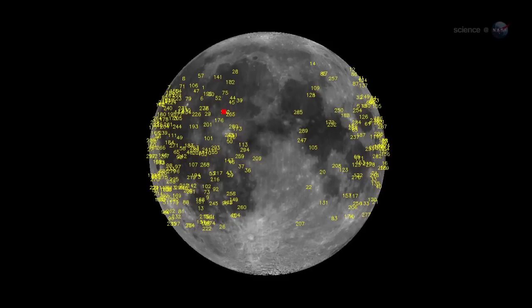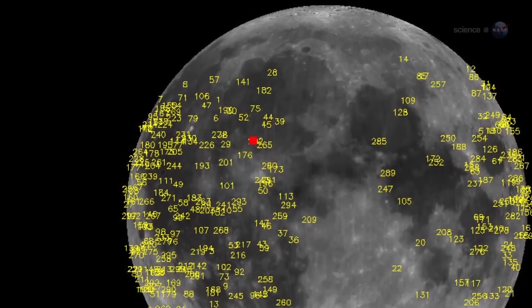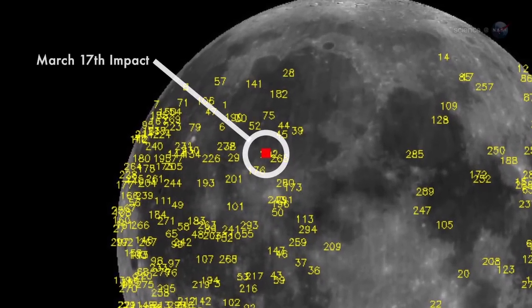Since the monitoring program began in 2005, NASA's Lunar Impact Team has detected more than 300 strikes, most orders of magnitude fainter than the March 17th event.